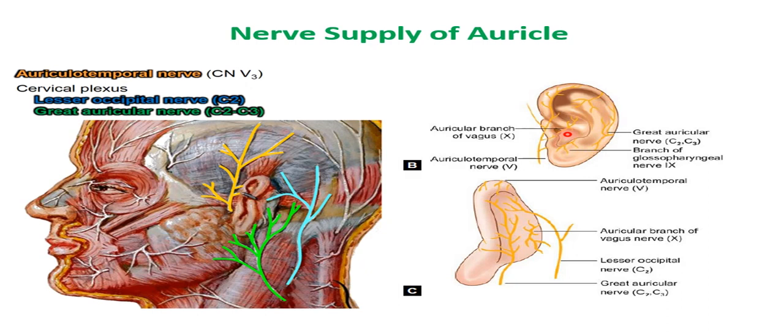Regarding blood supply of the auricle: the dominant blood supply is from the posterior auricular artery, a named branch of the external carotid artery, with additional supply from the superficial temporal and occipital arteries.